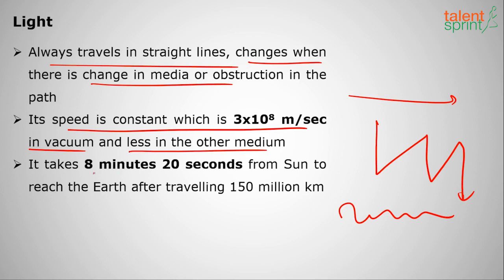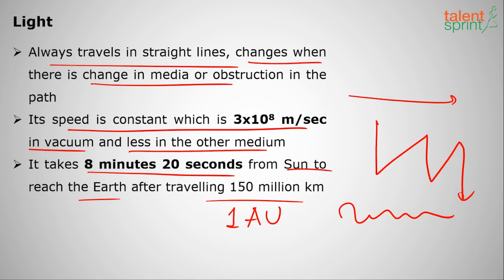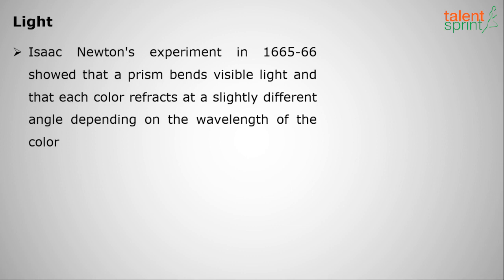Light takes 8 minutes and 20 seconds to travel from the Sun to Earth, covering 150 million kilometers, which equals 1 astronomical unit — as studied in geography. This is a repeated question in SSC examinations: 8 minutes 20 seconds is the time taken by light to travel from the Sun to Earth.